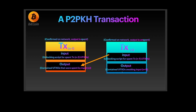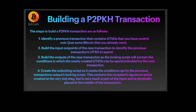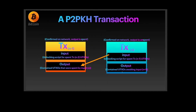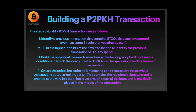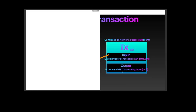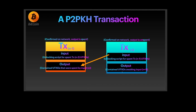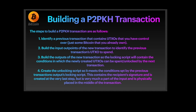Building a P2PKH transaction: the first step is to identify a previous transaction containing UTXOs that you control — some bitcoin you already own. Next, build the input outpoints of the new transaction to identify the previous transaction's UTXOs to spend. Then build the outputs of the new transaction — the locking script contains the conditions under which the newly created UTXOs can be spent and unlocked by the next transaction. The last step is to create the unlocking script so it meets the conditions set by the previous transaction's output locking script. This contains the recipient's signature, created at the very last step, and is physically placed in the middle of the transaction.